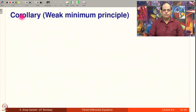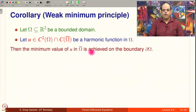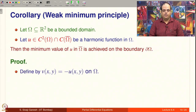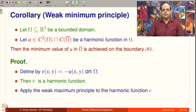A quick corollary of the Weak Maximum Principle is the Weak Minimum Principle. Let omega be a bounded domain in R², let U be in C²(ω) ∩ C(ω̄) and harmonic. Then the minimum value of U on ω̄ is achieved on the boundary. The proof is simple: if U is harmonic then −U is also harmonic. Apply the Weak Maximum Principle to V = −U and conclude. The details are left as an exercise.